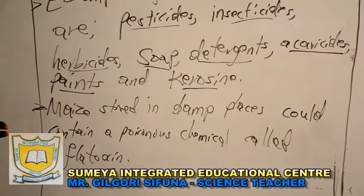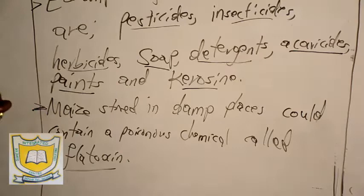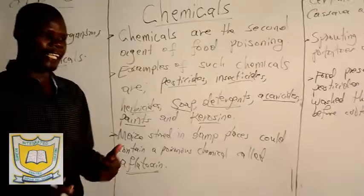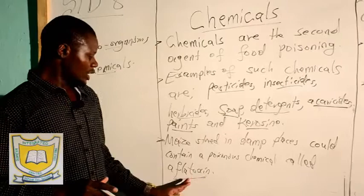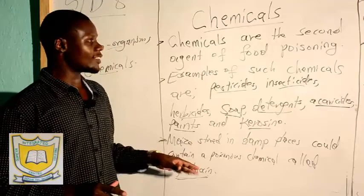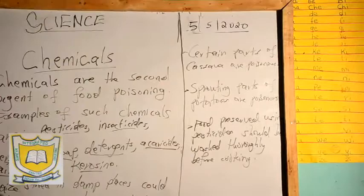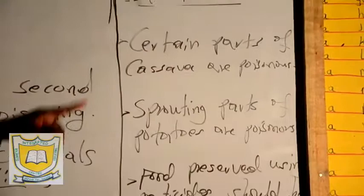There are also other natural chemicals that are very dangerous. Some foods have natural chemicals. For example, if maize is stored in a damp place or is not properly dried, it contains a chemical known as aflatoxin. Aflatoxin is a chemical found on maize that is stored in a damp place or was not properly dried — it is a natural chemical found in grains. We also have certain parts of cassava that are poisonous, which is another natural form of poison.